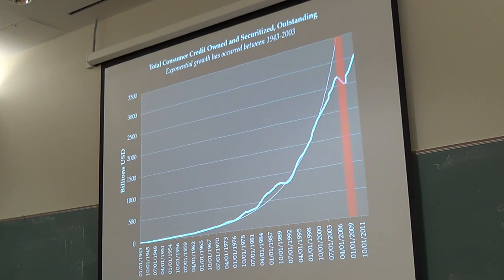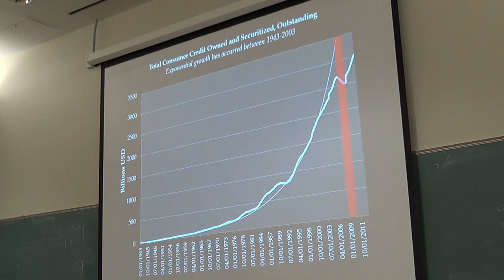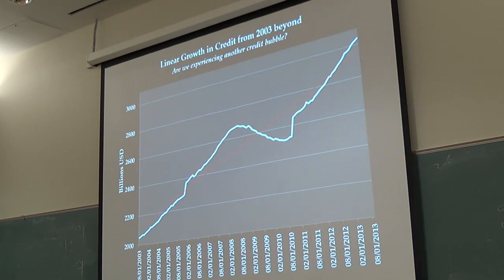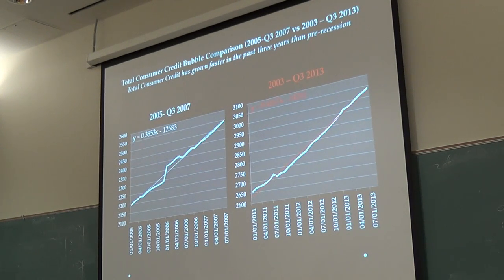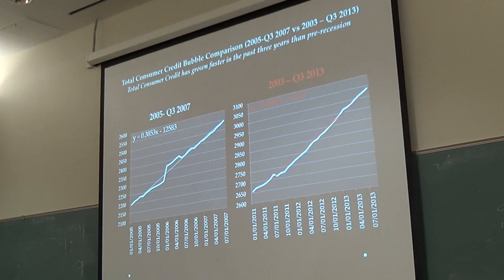This is total consumer credit — short-term and intermediate — which doesn't include long-term like 30-year mortgages, just car loans and credit cards. There was exponential growth up until the bubble, which then became more linear. Looking at pre-recession versus post-recession from 2003 to 2013, the slope of growth in the three years prior to recession is lower than the slope of the past three years. So consumer credit has been growing faster than pre-bubble, which is a risk we have our eye on.